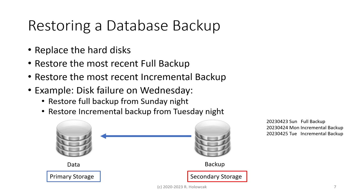How do we restore from a database backup? If there's a disk failure, the first thing is to replace or make new hard disks available, then restore the most recent full backup. If we're using incremental backups, we restore those incrementals to get as close as possible to the time of failure. For example, if we have a disk failure on Wednesday, we restore the full backup from Sunday, then the incremental from Monday, then the incremental from Tuesday — bringing the database up to date as closely as possible to the time of failure.